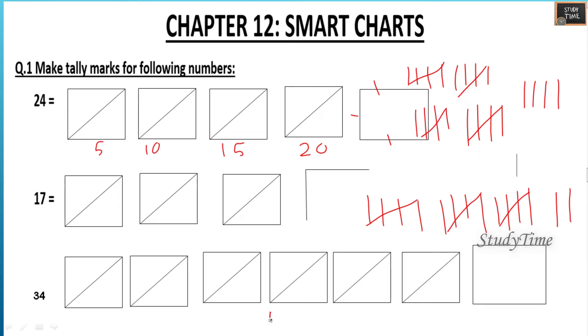Next we'll see for 34. For 34, here it is 1, 2, 3, 4, 5, 6, 7, 8, 9, 10, 15, 20, 25, 30, 31, 32, 33, 34.